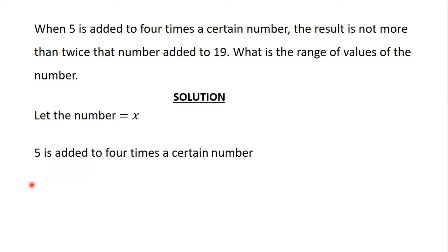The first part of the question says that 5 is added to 4 times a certain number. The number is now x, so 5 is added to 4 times x. 4 times x is 4x. So that gives us 5 plus 4x.